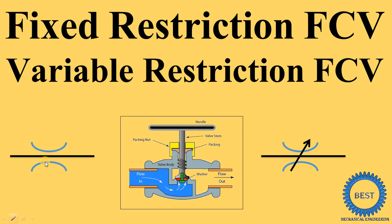Here you see this is one orifice, and this line is indicating the flow of the fluids. It is fixed, meaning here the arrow is not drawn. So when the arrow is drawn, it is called as the variable restriction — meaning we are able to change this area. That is called as the variable restriction.